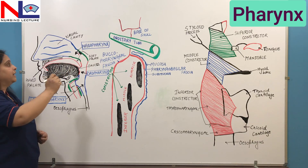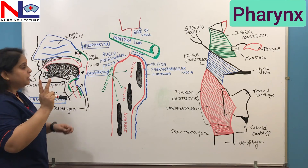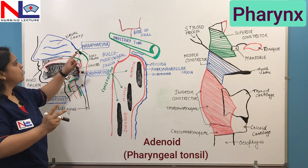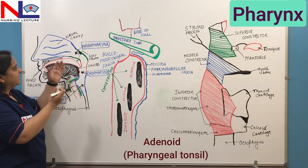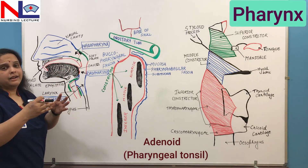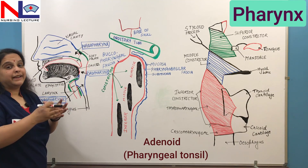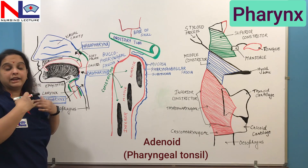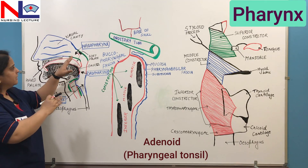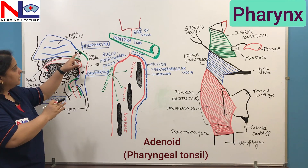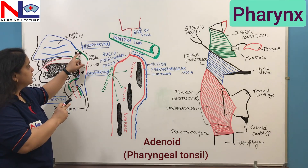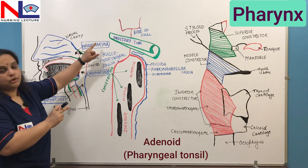In the nasopharyngeal part there are two important structures. One is the adenoid, also called the pharyngeal tonsil. Whatever the tonsils are — whether pharyngeal tonsil or the tonsils belonging to the oropharyngeal part — they all provide immunological protection against various foreign invaders that can invade through the air route or via food. The adenoid is situated in the posterior wall of the nasopharynx.